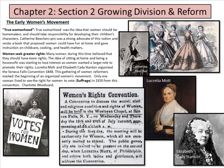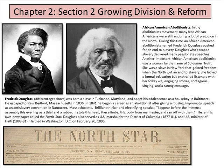African American abolitionists: in the abolitionist movement, many free African Americans were still enduring a lot of prejudice in the North. African American abolitionist Frederick Douglass published and pushed for an end to slavery. Douglass, who escaped slavery, delivered passionate speeches. He was born in Maryland, escaped to Massachusetts, and gave a rousing impromptu speech at an anti-slavery convention in Nantucket. He was a brilliant thinker and electrifying speaker, once saying: 'I appear before this immense assembly as a thief and a robber — I stole this head, these limbs, this body from my master and ran off with them.'